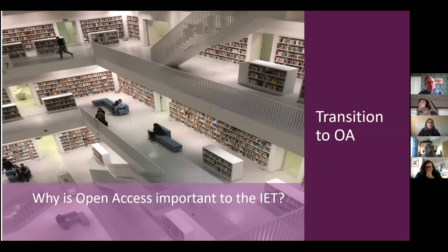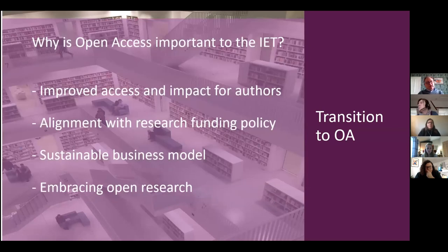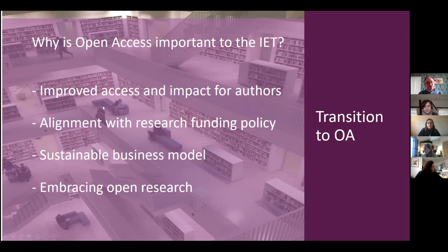First, we flipped our entire journal program to gold open access. And secondly, after over 100 years of self-publishing, we went into partnership with John Wiley to do this. So why is open access important to the IET? We had been investing heavily in open access over the previous five to seven years, launching gold OA journals to supplement our existing portfolio of around 28 hybrid journals. We began to acknowledge that those gold OA launches were getting very good — and in some cases better — impact for our authors and improved access.